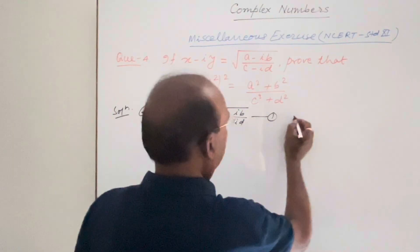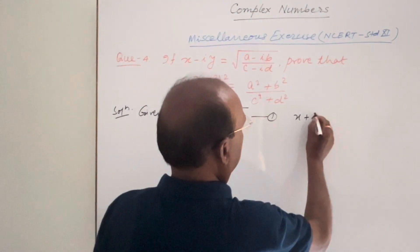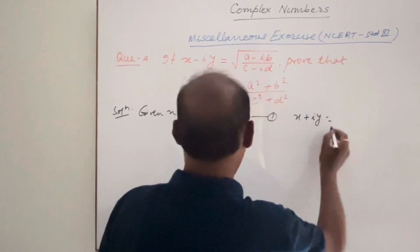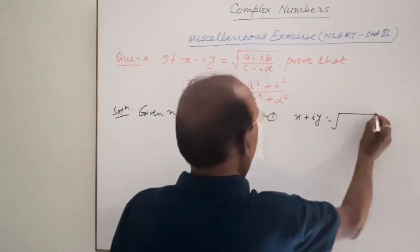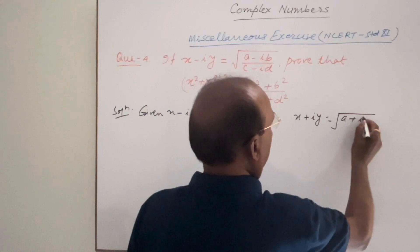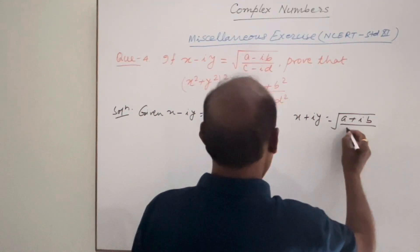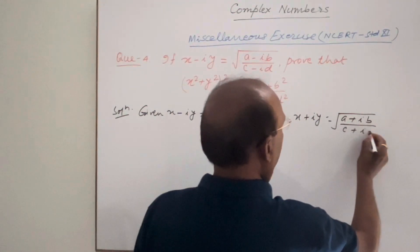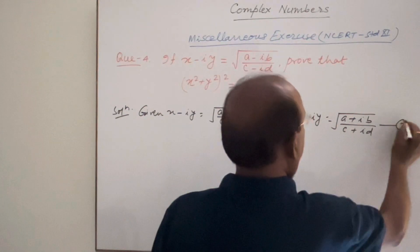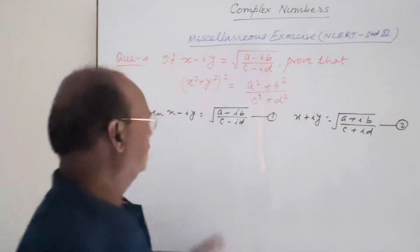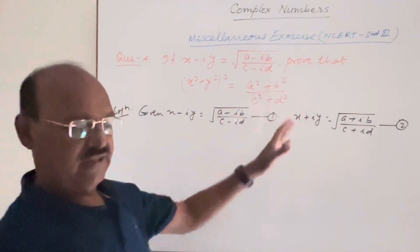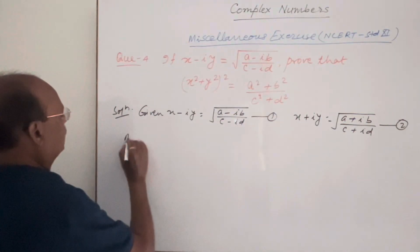Then we will get here x plus iy is equal to root over a plus ib upon c plus id. Let us call it relation number 2. Now multiplying these two relations, multiplying relation 1 and 2.